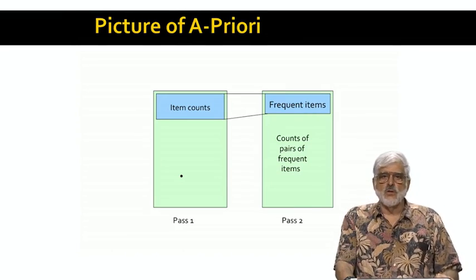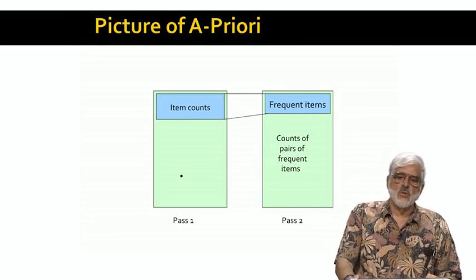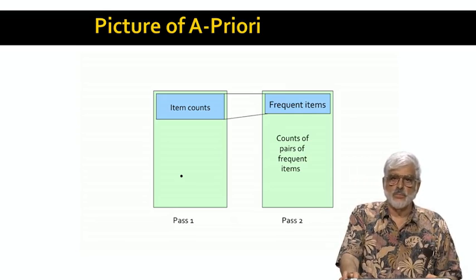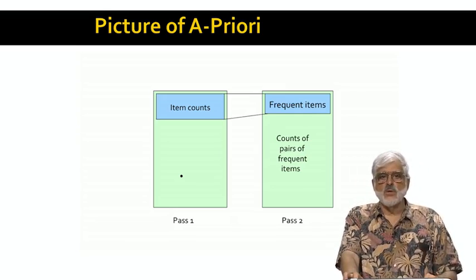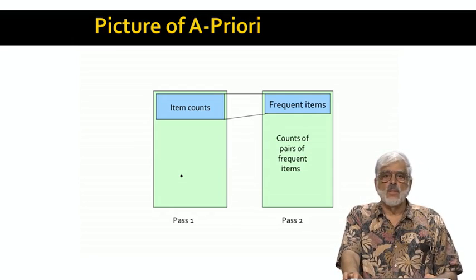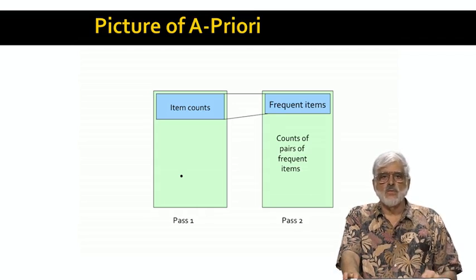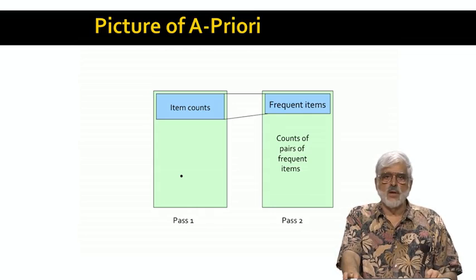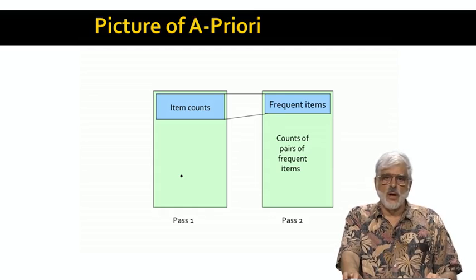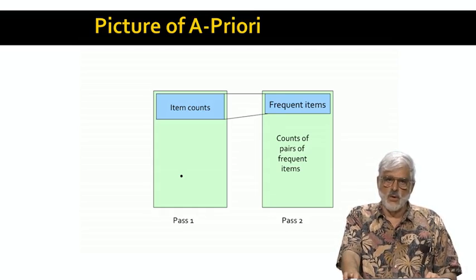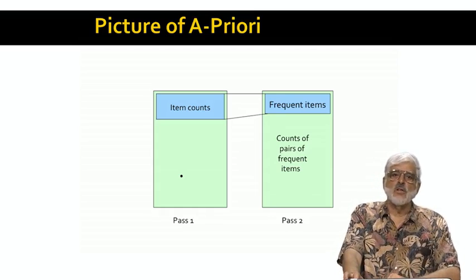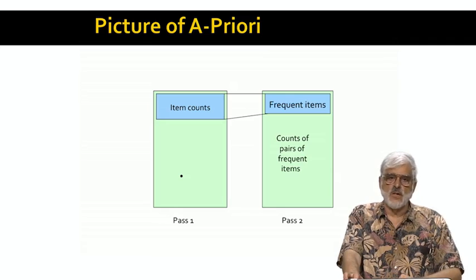Here's a picture, the first of a series we're going to use to compare different algorithms. The rectangles each represent main memory and how it is used on each pass. On the left, we see the first pass of the A-Priori algorithm. We need space in main memory only for the counts of the items. And we show it as occupying only a small fraction of main memory, because typically we will need much more main memory for the second pass.